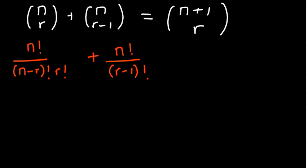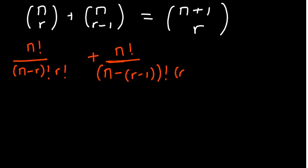Now think about this. There's a mistake I've made — on the second term, it should be n factorial over n minus (r minus 1) factorial, and then r minus 1 factorial, just like we've done on the first part: n factorial on top, on the bottom the difference, and then r factorial itself.